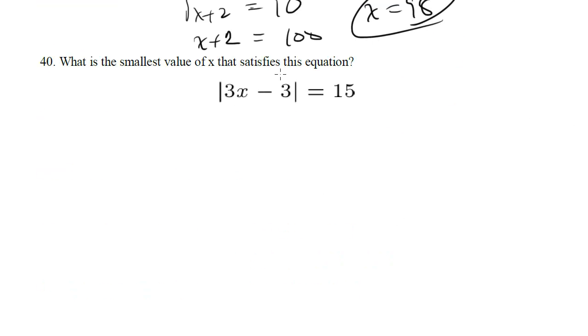What is the smallest value of x that satisfies this equation? We've got an absolute value equation, so we've got two scenarios. Either 3x minus 3 could equal 15 or 3x minus 3 could equal negative 15. Because if this becomes negative 15, the absolute value bars will make it positive which will then satisfy the overall equation.